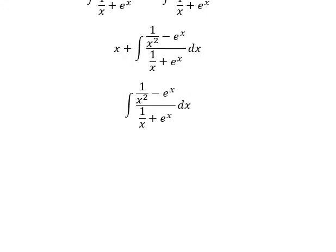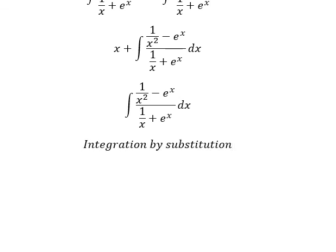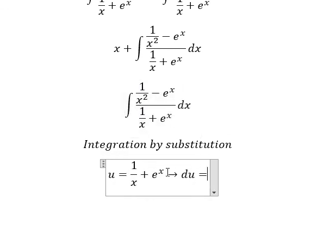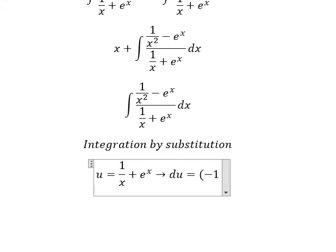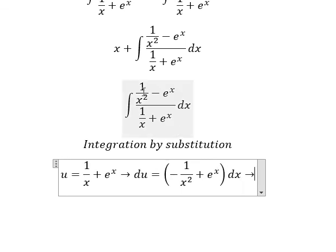For this one, I will use integration by substitution. So I will put about u equals to this one. If I do the first derivative for both sides, we have negative one over s squared plus e to the power of s ds. This one is about positive one over s squared minus e to the power of s.